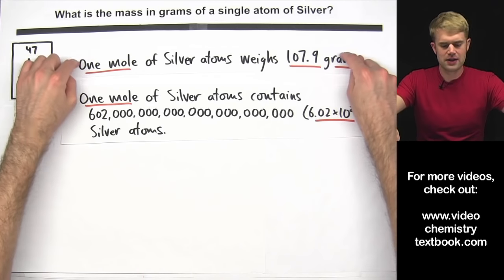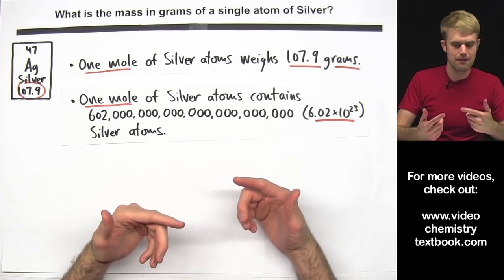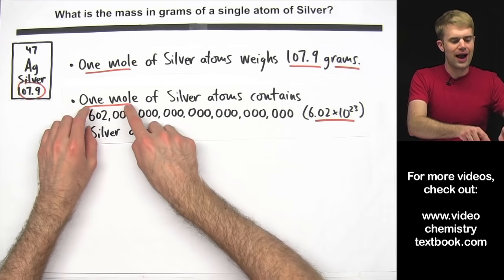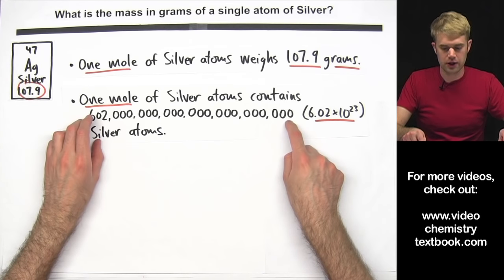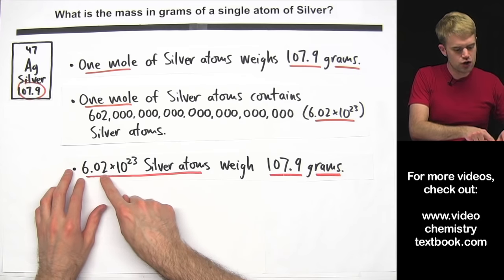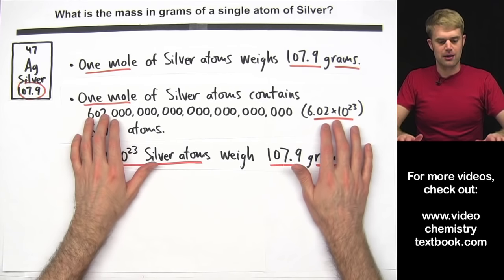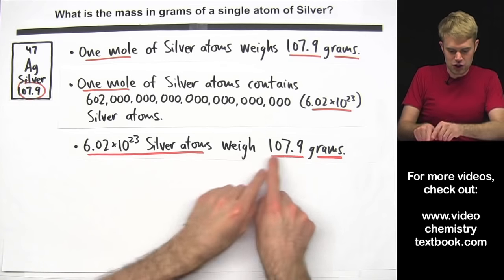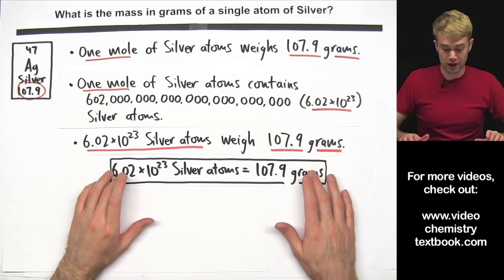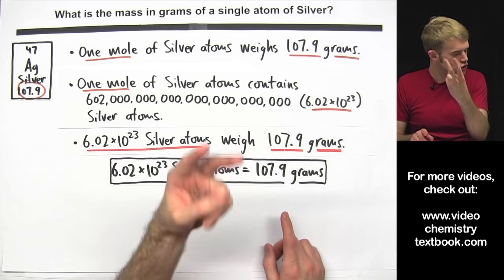To solve this problem we want to take these two pieces of information and combine them to make a third piece that's going to be the most useful for us. We know that one mole of silver atoms weighs 107.9 grams, and we know that 602 hexillion silver atoms are in one mole. From these two pieces of information we can write an equivalence, and from that relationship we can write two conversion factors.